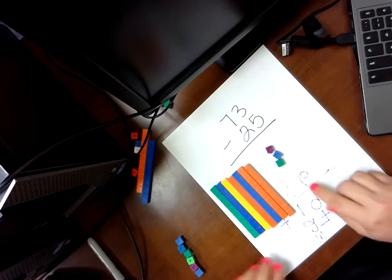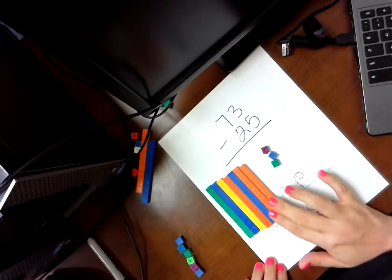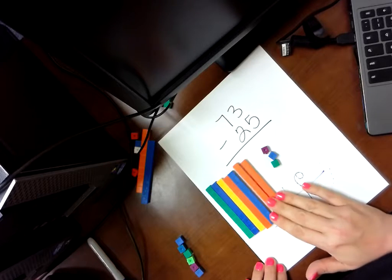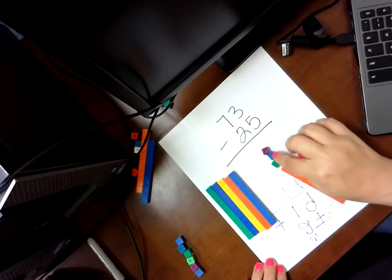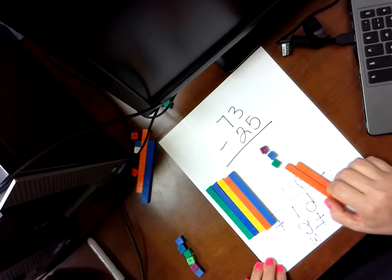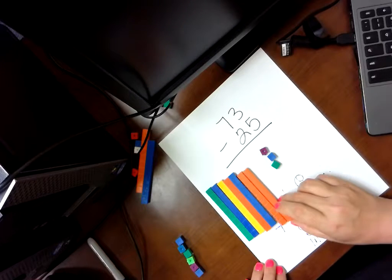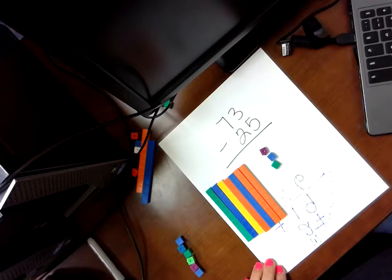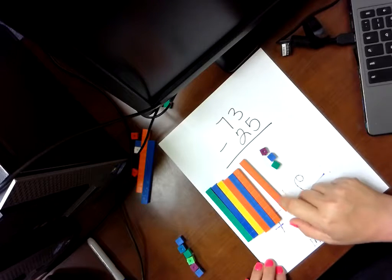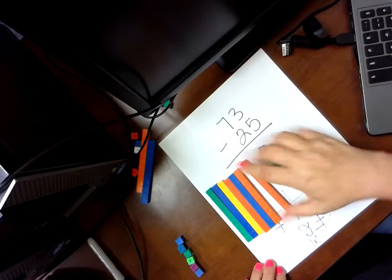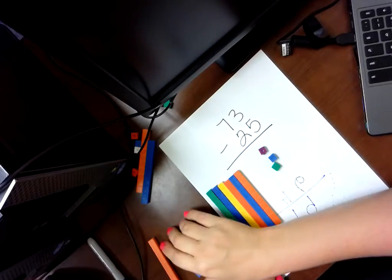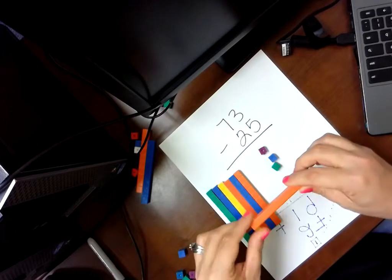But now, I'm going to take 25 away. Well, how can I do that? I can't. I can take the 20, but that's only 23. How can I take 25? I can take one of these and break it up into this.